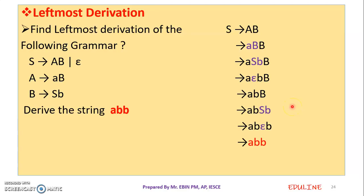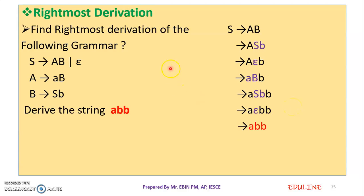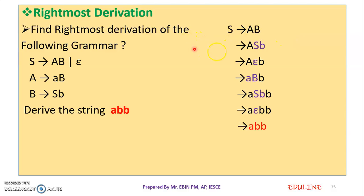This is the right-most derivation. If we apply the right-most derivation, we always replace the rightmost non-terminal first, removing capital letters from the right. We apply the production rule using the right-most derivation. We start by changing B first.